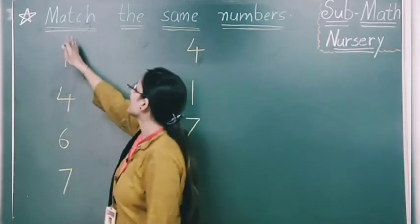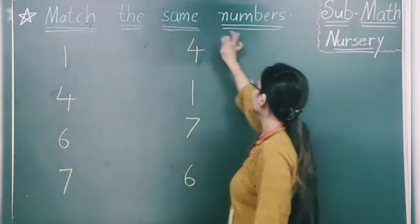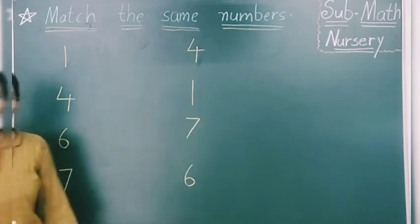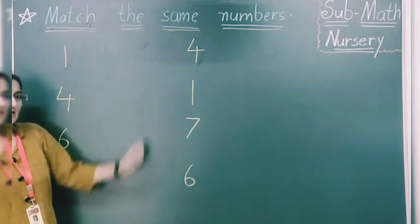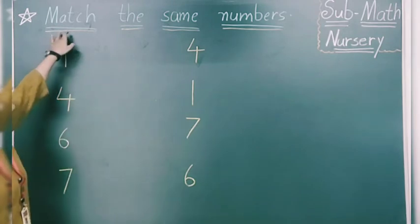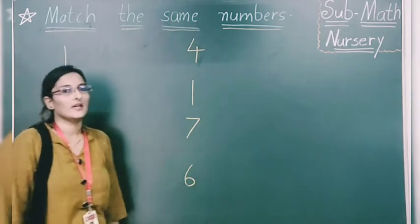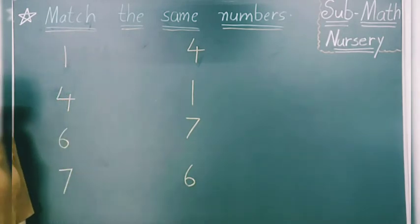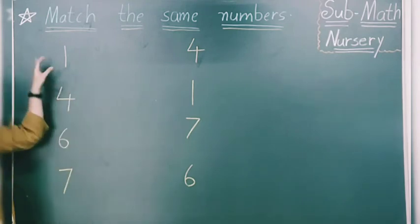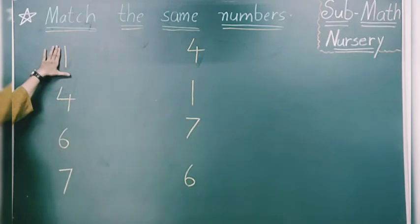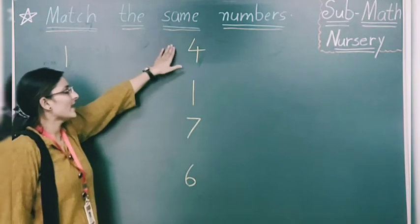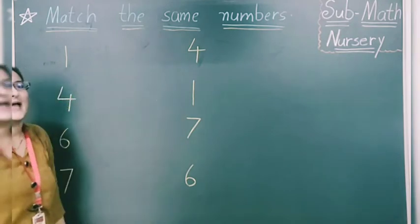Now look at here students — match the same number. What we have to do? You are able to see on the board — there are two sides. We have to match this number to that number by drawing a line. What is this? Number 1. You have to find number 1 in this line.